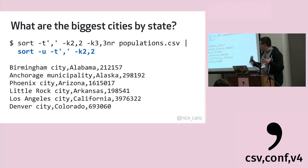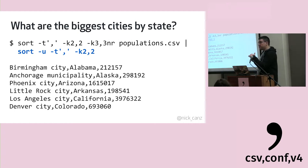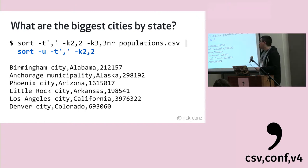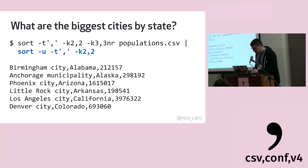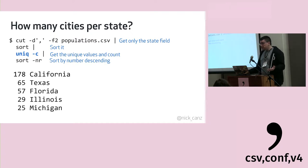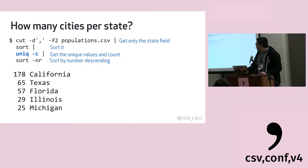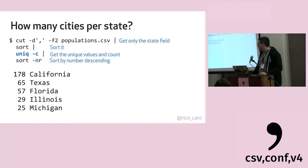We can chain things together to answer questions like: what are the biggest cities by state? We take the sort command from the previous slide and sort again with the -u flag for unique, giving it the state column. That gives us unique output by state — essentially the biggest city per state. Another question: how many cities per state? We get just the state column, then use 'uniq' with the -c flag to give us the count of how many times each state occurred.